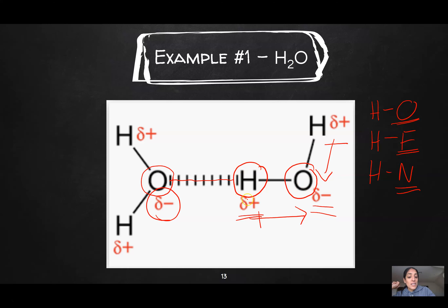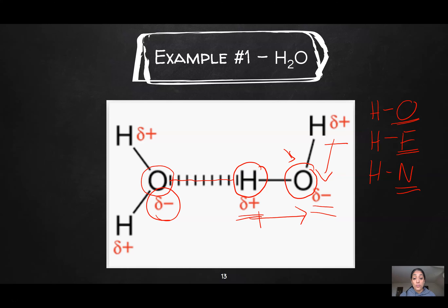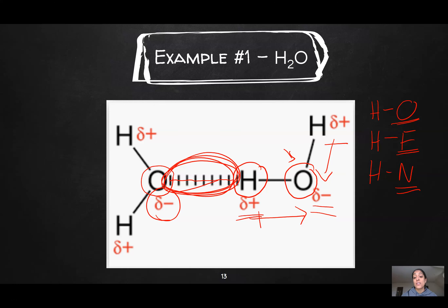This is called hydrogen bonding because it involves a hydrogen bonded to an oxygen, having an intermolecular attraction with an oxygen of another molecule. We're looking for hydrogen with oxygen, hydrogen with fluorine, or hydrogen with nitrogen — O, N, and F are the three elements that are part of hydrogen bonding. Two criteria must be met: one, a hydrogen needs to be connected to an O, N, or F; two, that same hydrogen needs to have an intermolecular attraction with an O, N, or F. O, N, and F are highly electronegative, causing a big difference in electronegativity, making this force very strong.